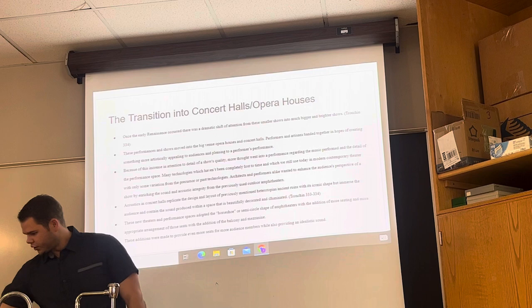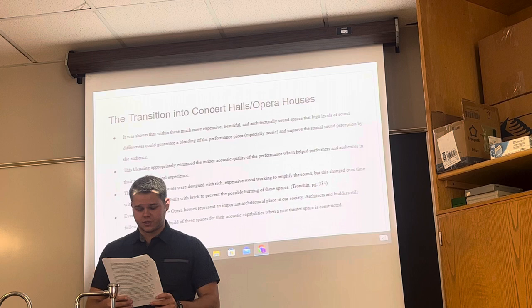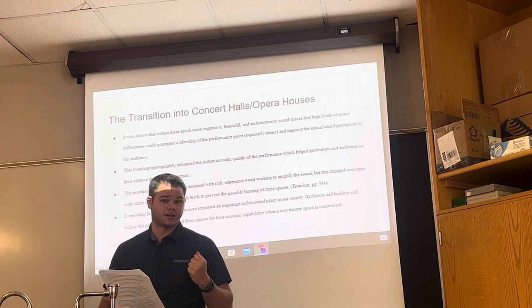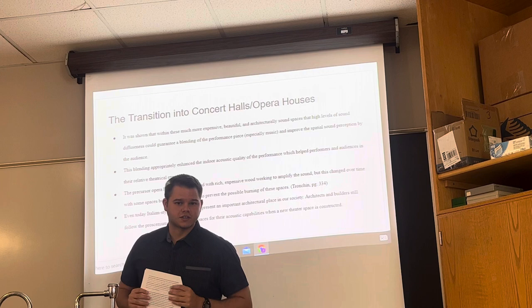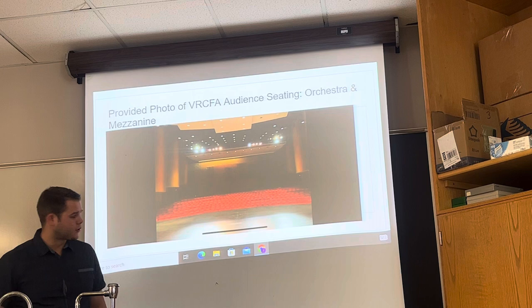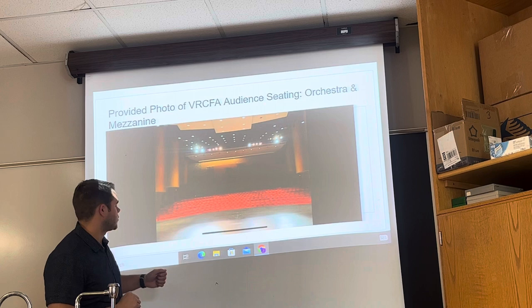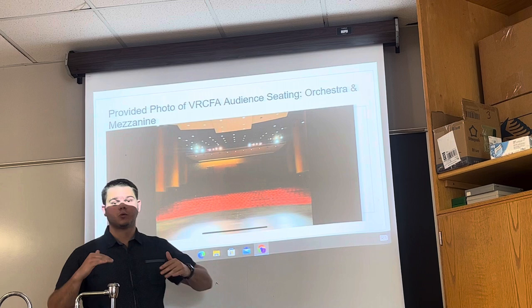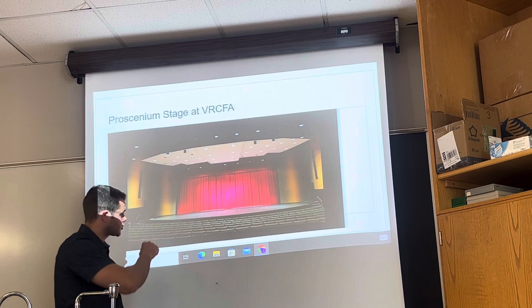The precursor opera houses were designed with rich, expensive woodworking to help amplify the sound. Even today, Italian-style opera houses still hold a place in architectural society, and we still replicate these buildings with theaters today through the proscenium archway. I provided a photo showing the seating implemented with the opera houses — not only the orchestra seating, but behind the drape here is the mezzanine seating, which is the upper balcony. This is the proscenium arch of the Italian-style opera houses, enclosing the action onto the stage.